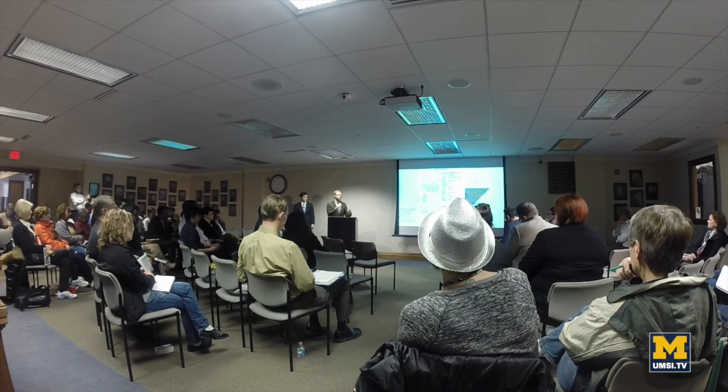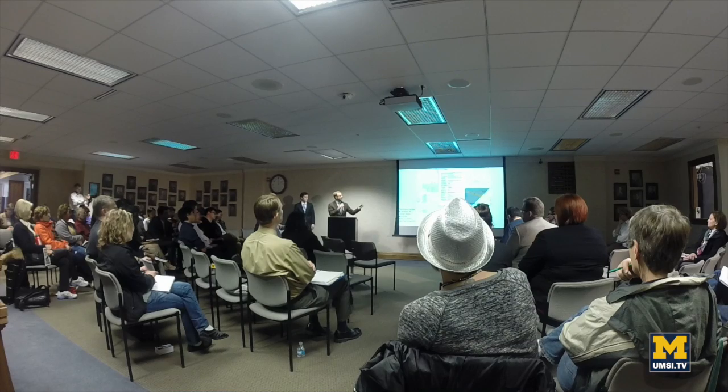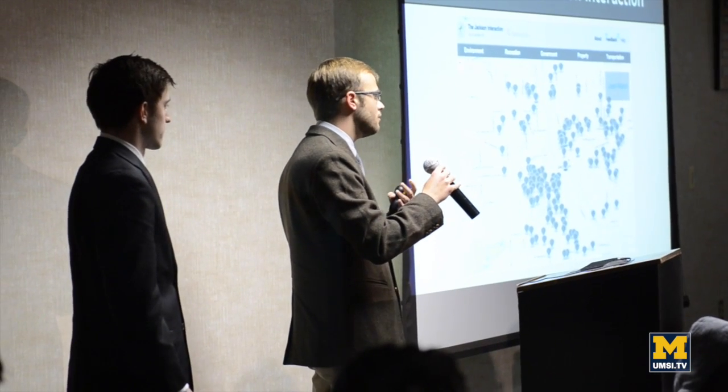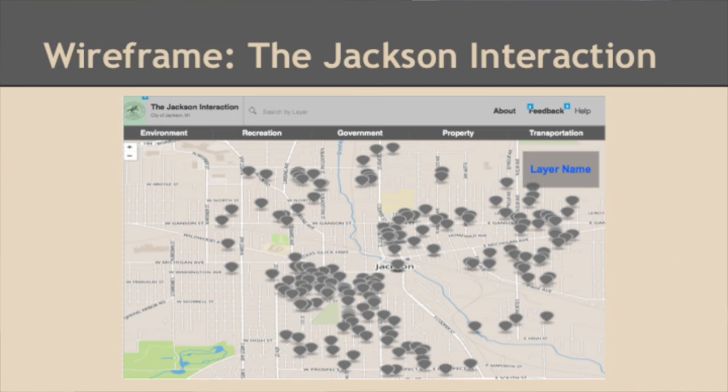The idea is that people can explore and discover things about the city they maybe didn't necessarily realize. This is an example of different meterless parking. Wade has done a lot of work to compile all this data, and we thought it'd be nice to have it in one repository along with things like where different community gardens or parks are. This is just a wireframe mockup of the site that's currently in development. In addition to dynamically viewing those different layers, for the more intrepid user we wanted to provide the functionality to actually download the layers themselves.